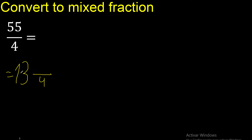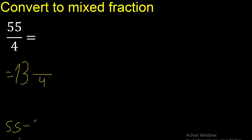Multiply by 13 is 52, is not greater. Therefore 55 minus 52 is 3. 3 is here. Finish.